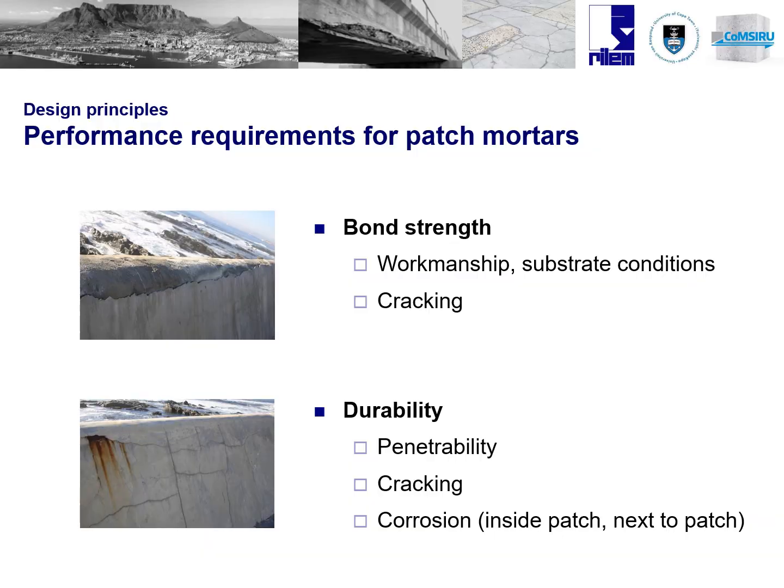So what are the performance requirements for patch repairs? The patch repair must stick to the substrate — we need sufficient bond strength. Bond strength is mostly affected by workmanship and substrate surface conditions, but it's also affected by cracking, as cracking creates boundary conditions from which delaminations occur. We also want sufficient durability, meaning we need to minimize the penetrability of the patch to protect the embedded steel reinforcement, minimize or prevent cracking, and prevent reinforcement corrosion inside the patch and in the surrounding concrete. This presentation will focus on the issue of cracking because it is one of the main factors that influences these performance criteria.